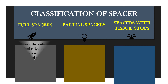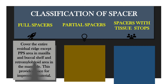Beginning with the full spacer — it covers the entire residual ridge except the PPS area in maxilla, and the buccal shelf area and mylohyoid area in mandible. This provides space for impression material.